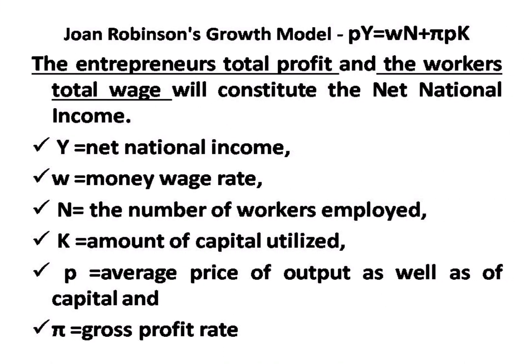Joan Robinson's growth model is of the form PY = WN + πPK, where PY is the net national income, WN is the workers' total wage, and πPK is the entrepreneur's total profit. Here, Y is the net national income, W is the money wage rate, N is the number of workers employed, K is the amount of capital utilized, P is the average price of output as well as capital, and π is the gross profit rate.